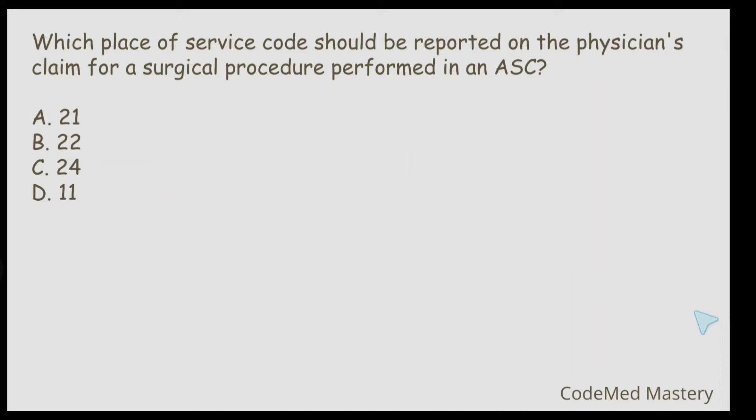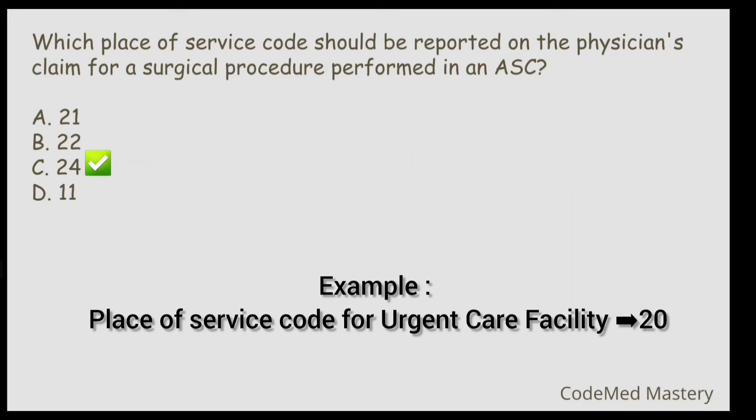Next question: Which place of service code should be reported on the physician's claim for a surgical procedure performed in the ASC? You can find place of service codes in the very first page of your CPT book, under place of service codes for professional claims. Under that, ASC — ambulatory surgical center — has place of service code 24. So the right answer is option C: 24. For example, urgent care facility would be 20.